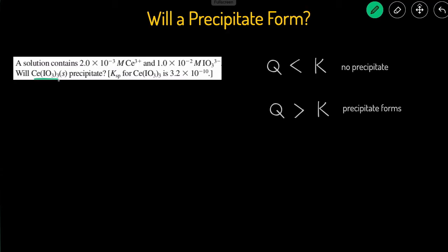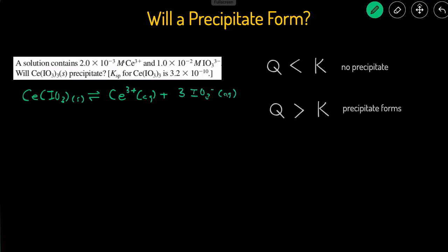The first thing we should do is write how this solid would dissociate, because whenever we're given Ksp, the reaction is the solid dissociating. So we start with CeIL₃ solid, and that dissociates into Ce³⁺ aqueous and 3 IL₃⁻ aqueous. There's a coefficient of 3 because there are 3 IL₃ units in the solid, so we get 3 of the IL₃⁻ ions.